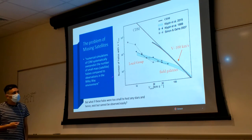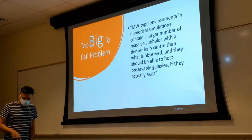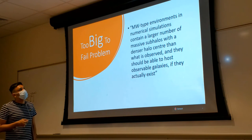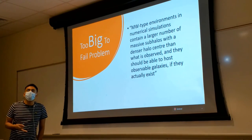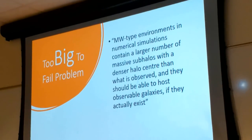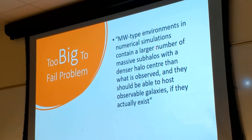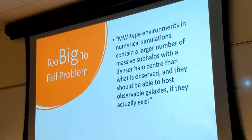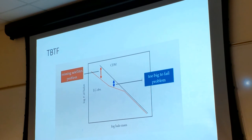This leads to asking: what if these halos predicted by numerical simulations are small enough that they can't hold their stars or gases together — so there's not enough star formation, and they would not be visible? That question led to another problem: the too big to fail problem. If you look closely at Milky Way-type environments, there are many sub-halos that are dense and large enough that they should be able to host galaxies — but there's a significant discrepancy with observations.